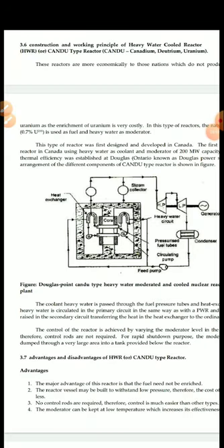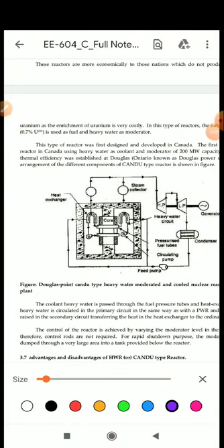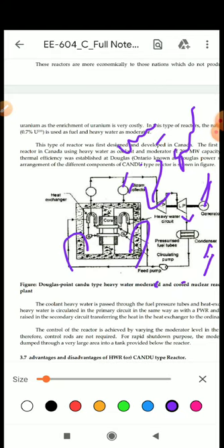The steam is collected by the steam collector and this steam goes to the turbine. This turbine generates the mechanical energy which is given to the generator and this generator generates the electricity. The water from the turbine goes to the condenser and the condenser feeds the water to the feed pump. This water recirculates in the reactor for further use.